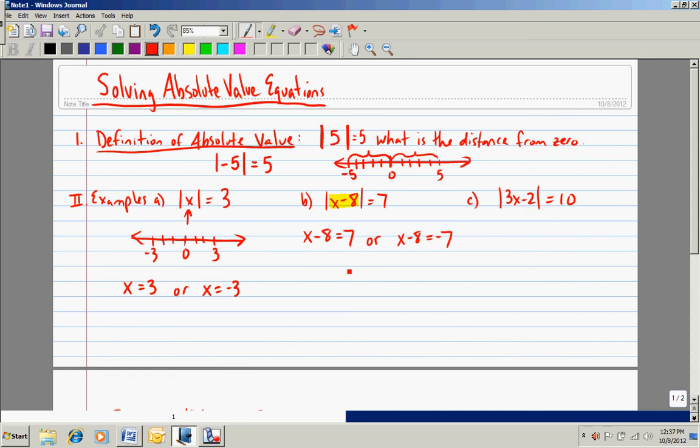7 spaces from 0 to the left. Positive 7 spaces to the right, negative 7 spaces would be to the left. The distance from 0. So we're saying that this value in the absolute value bars is 7 spaces from 0. So let's answer.